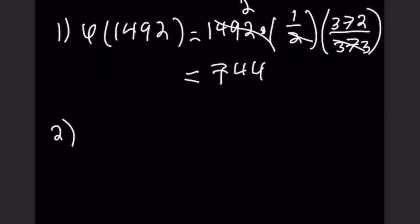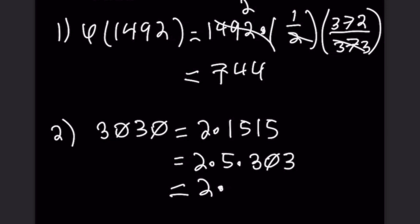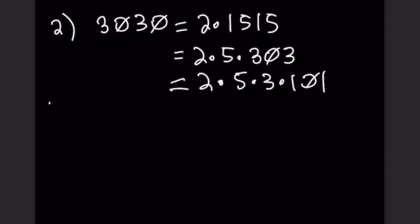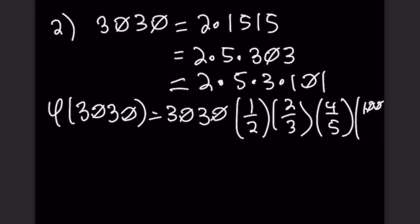For number two, we find the prime factorization of 3030. Dividing by 2 gives 2 × 1515; dividing by 5 gives 2 × 5 × 303; dividing by 3 gives 2 × 5 × 3 × 101, and 101 is prime. So φ(3030) = 3030 × (1/2) × (2/3) × (4/5) × (100/101) = 800.